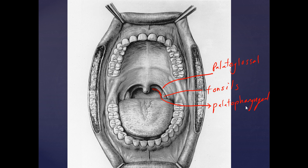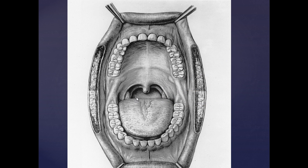Your palatopharyngeal arch is going to be the posterior portion, while your palatoglossal arch is going to be the anterior portion, with your tonsils in the middle. How did we get that name? Palato — so palate, soft palate, hard palate — so it's closer to the palate. Glossal — tongue related. The tongue is in the anterior portion of your mouth, while your pharynx — pharyngeal — is going to be in the back of your mouth, so that arch is going to be further back. That structure there is going to be your pharynx, or the posterior portion of your mouth.